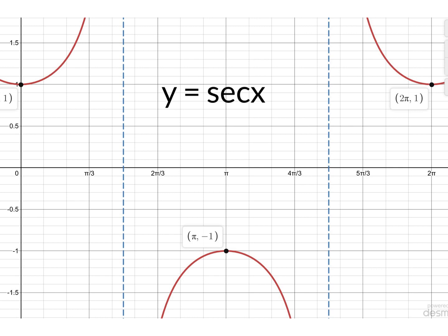You just need to be aware of where the turning points are, so at (0, 1), because obviously 1 divided by 1, at π minus 1, because 1 divided by minus 1 gets us negative 1, and that's how we try to remember our graph for sec x.